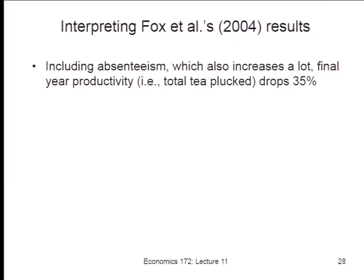If you look at the amount of tea actually plucked in the last year, it actually falls 35% — twice as much as our difference-in-differences estimate. So in the last year of life, they're way less productive than healthy people — which makes sense, because if you have full blown AIDS you're very sick. So 35% is probably a better number. In an econ-style paper we would have had 12 tables and 15 figures showing that, but they mention it in the text — 35%, a huge effect.